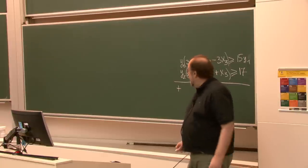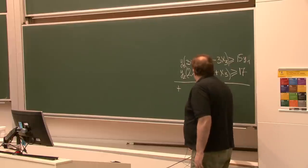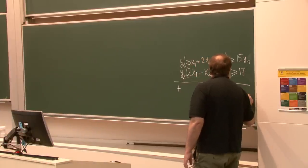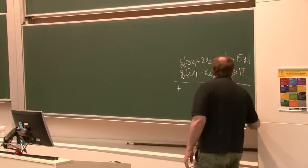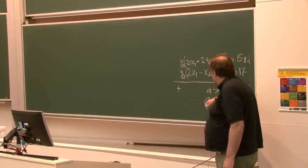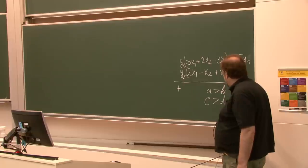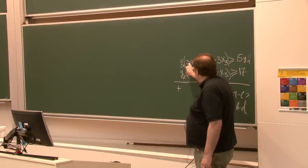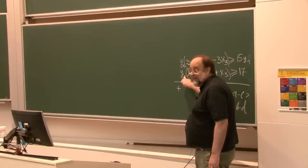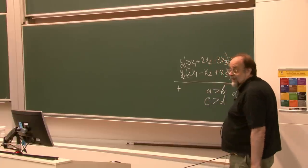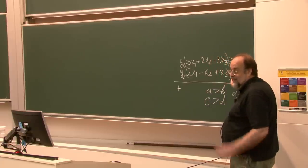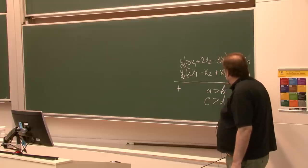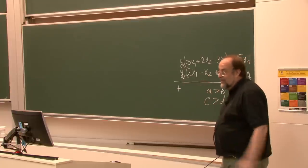If A is bigger than B and C is bigger than D, then it's not necessarily true that A minus C is bigger than B minus D. Summation preserves inequalities, but subtracting them doesn't. To see this most easily: if you allow y2 to be negative, when you multiply by y2 it will flip the inequality sign. When we multiply with a negative number, the inequality flips. So one inequality will be in this direction, the other in the opposite direction, and of course you cannot sum them up.